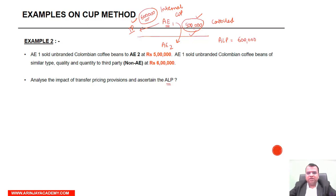The controlled transaction price is rupees 5,00,000 and the difference between rupees 6,00,000 and rupees 5,00,000 is going to be a rupees 1,00,000 transfer price adjustment in AE-1's taxable income.